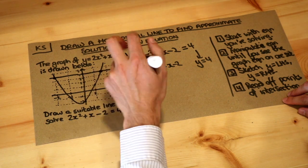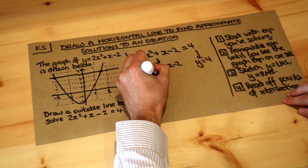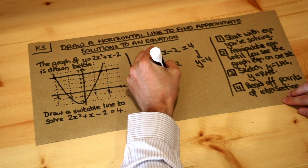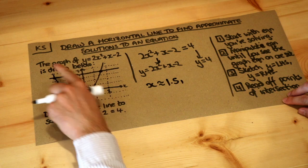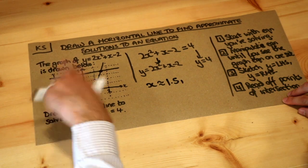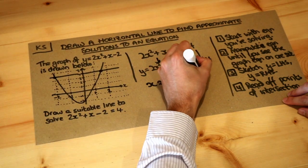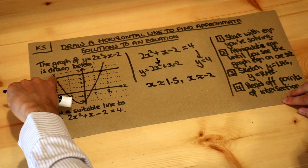So x here I'd say is maybe 1.5, x is approximately equal to, that's the approximately equal to symbol, 1.5, or x I'd say is minus 2. So minus 2 at this second point of intersection.